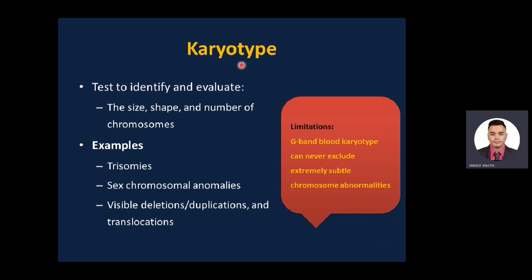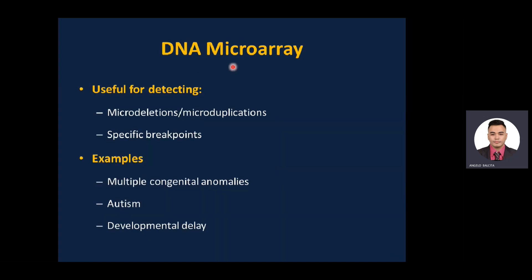Karyotype is a test to identify and evaluate the size, shape, and number of chromosomes. It is the most common test used to diagnose trisomies like Down syndrome, sex chromosome anomalies like Turner and Klinefelter syndromes, and visible deletions, duplications, and translocations. The limitation of G-band karyotype is that it cannot exclude extremely subtle chromosome abnormalities. In such cases, microarray is beneficial — but there is no need for microarray in classic presentations of Down syndrome, Turner, or Klinefelter, as these are easily identified with karyotype.